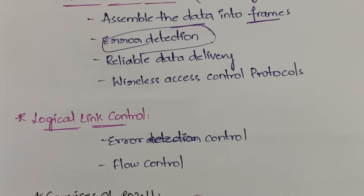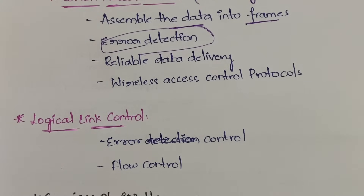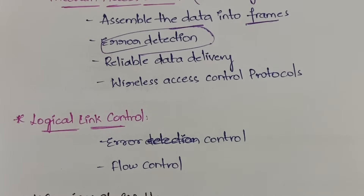The logical link control layer handles error control — controlling errors — and flow control, which determines the path and flow of data from one point to another.